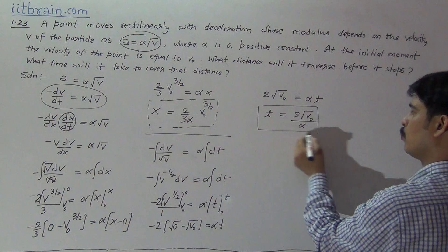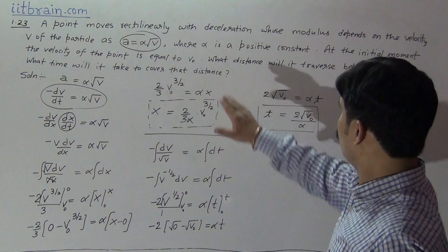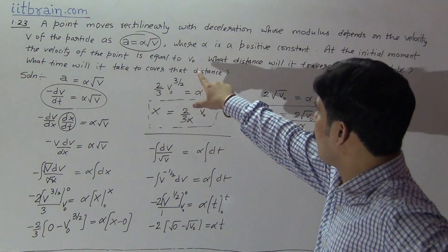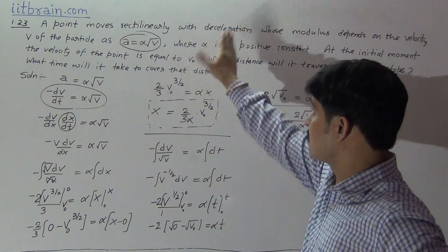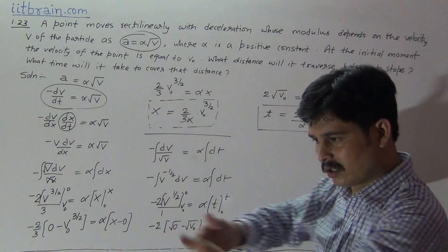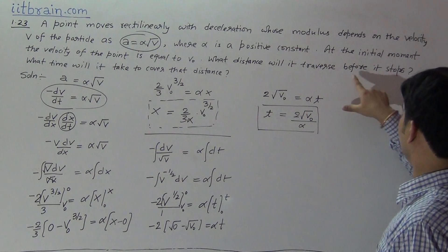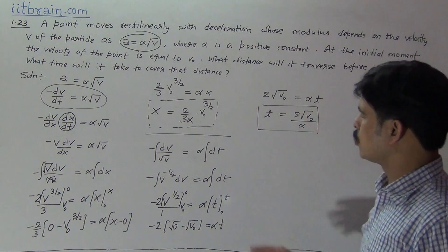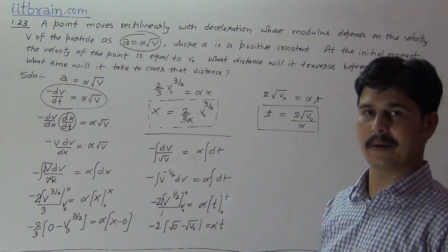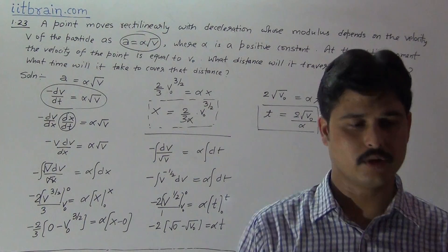So the final results are: distance covered by the particle before it stops is 2 by 3 alpha times v₀ to the power 3 by 2, and the total time taken by the particle before it stops is 2 root v₀ by alpha. Understand it carefully. Thank you.